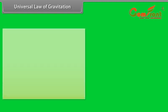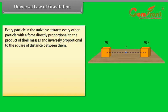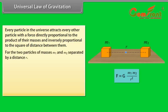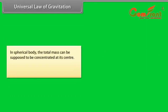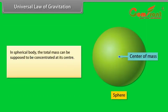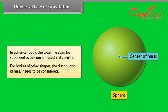Universal law of gravitation. According to Newton's law of gravitation, every particle in the universe attracts every other particle with a force directly proportional to the product of their masses and inversely proportional to the square of distance between them. The direction of this force is along the line joining the two particles. For the two particles of masses M1 and M2 separated by a distance r, F is equal to G M1 M2 upon r square. The constant G is called universal constant of gravitation. In spherical body, the total mass can be supposed to be concentrated at its center. For bodies of the other shapes, the distribution of mass needs to be considered.